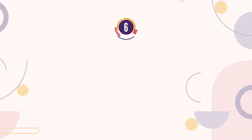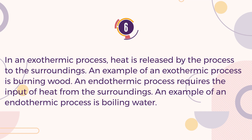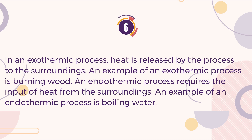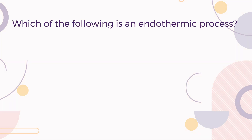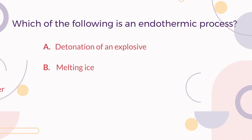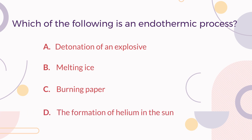Number 6. In an exothermic process, heat is released by the process to the surroundings. An example of an exothermic process is burning wood. An endothermic process requires the input of heat from the surroundings. An example of an endothermic process is boiling water. Which of the following is an endothermic process? A. Detonation of an explosive. B. Melting ice. C. Burning paper. D. The formation of helium in the sun. The correct answer is B. Melting ice.